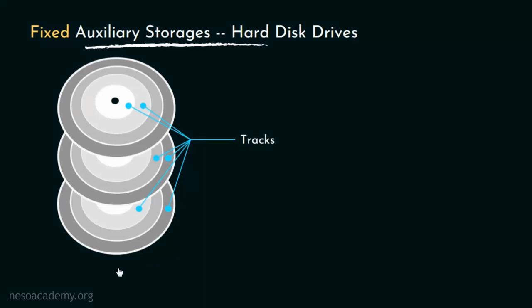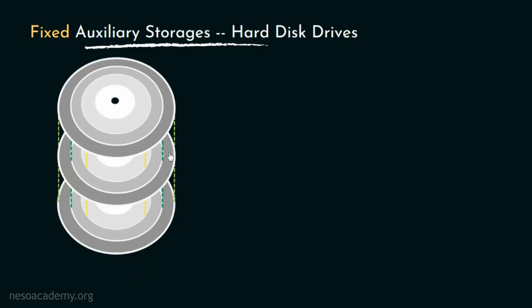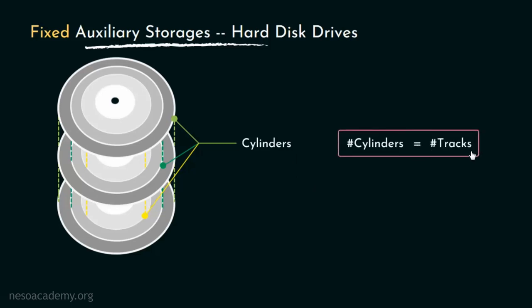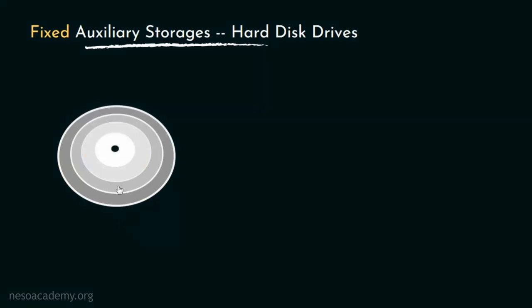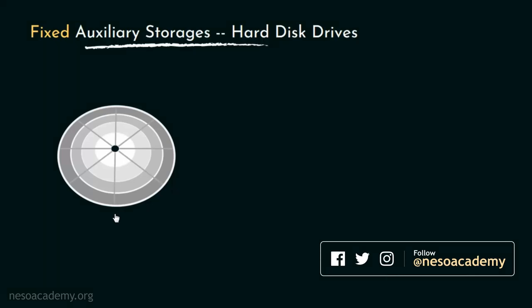If observed carefully, the tracks of the different platters make a cylindrical formation. That's the reason why tracks at one arm position — that is, tracks belonging to different disks but of equal diameter — are called cylinders. Due to this reason, the number of cylinders is actually equal to the number of tracks in every hard disk drive. The surface of every disk is divided into tracks, and the tracks are again subdivided into sectors, just like floppy disks.